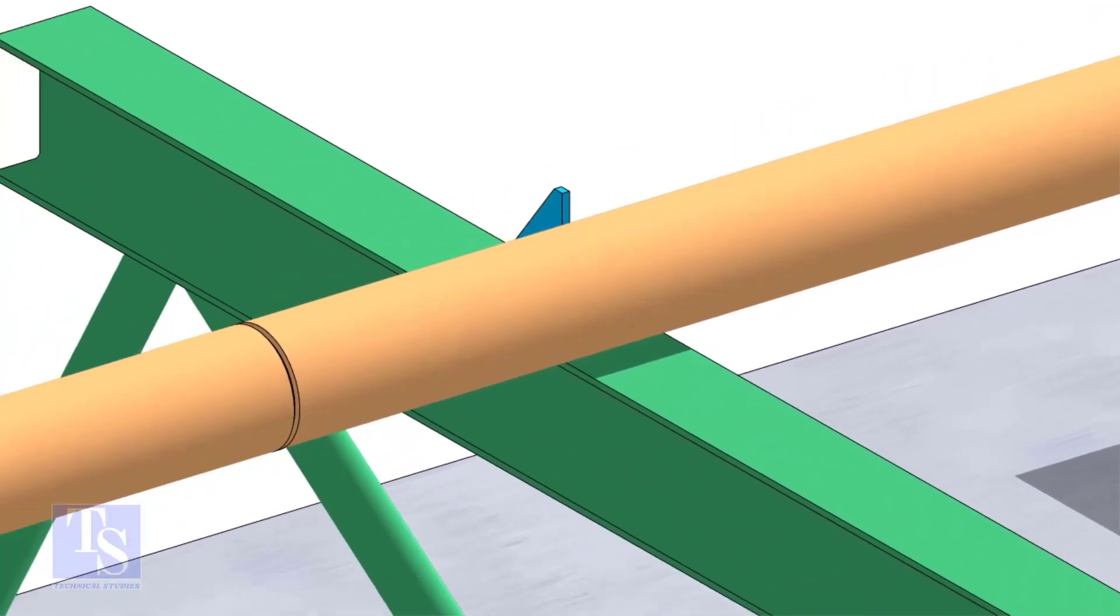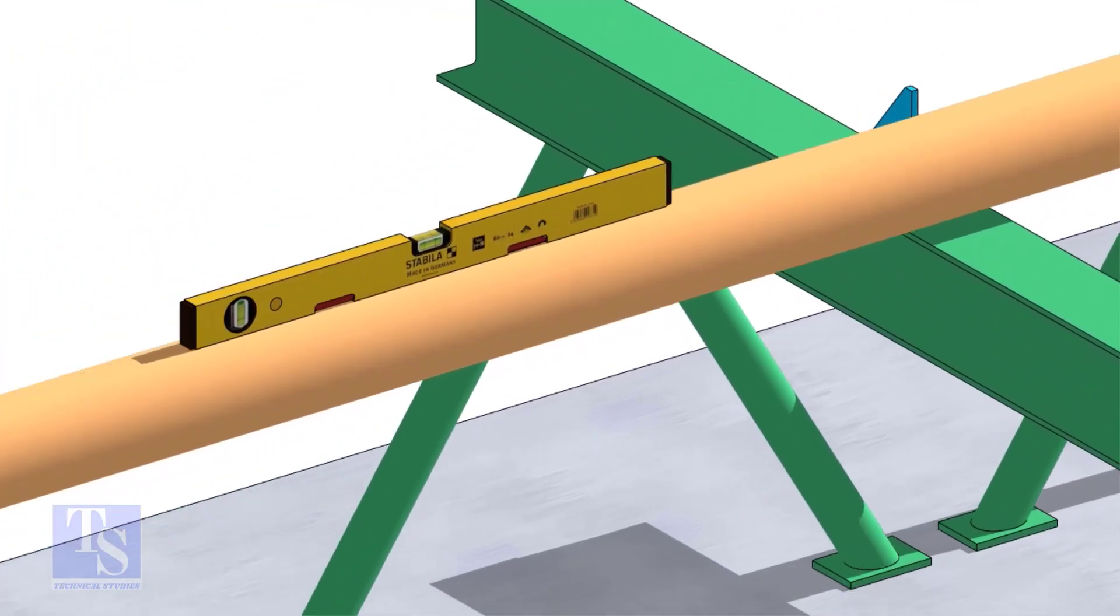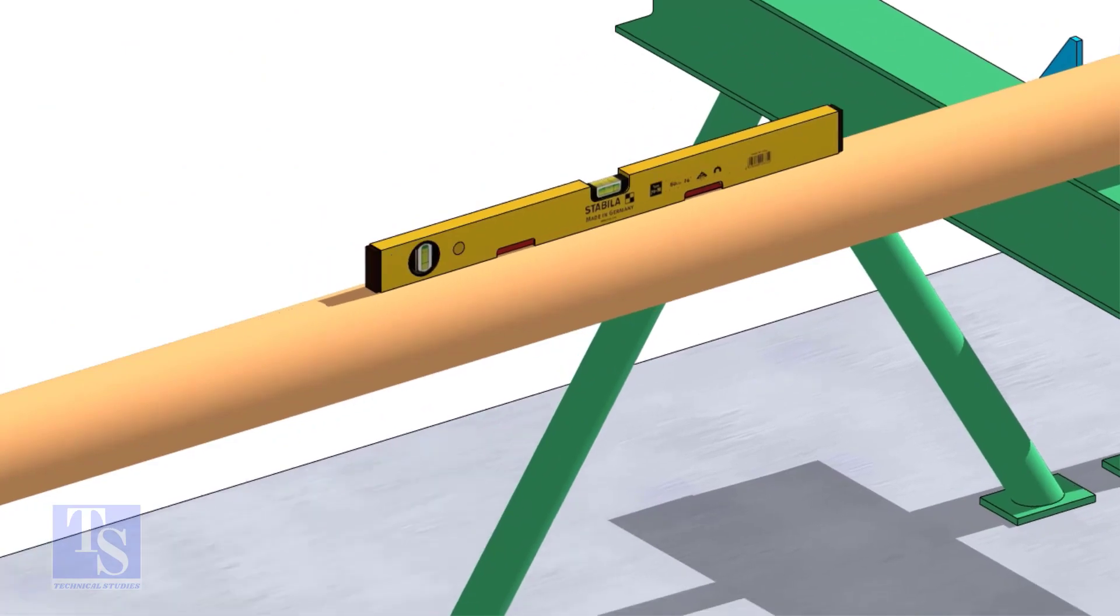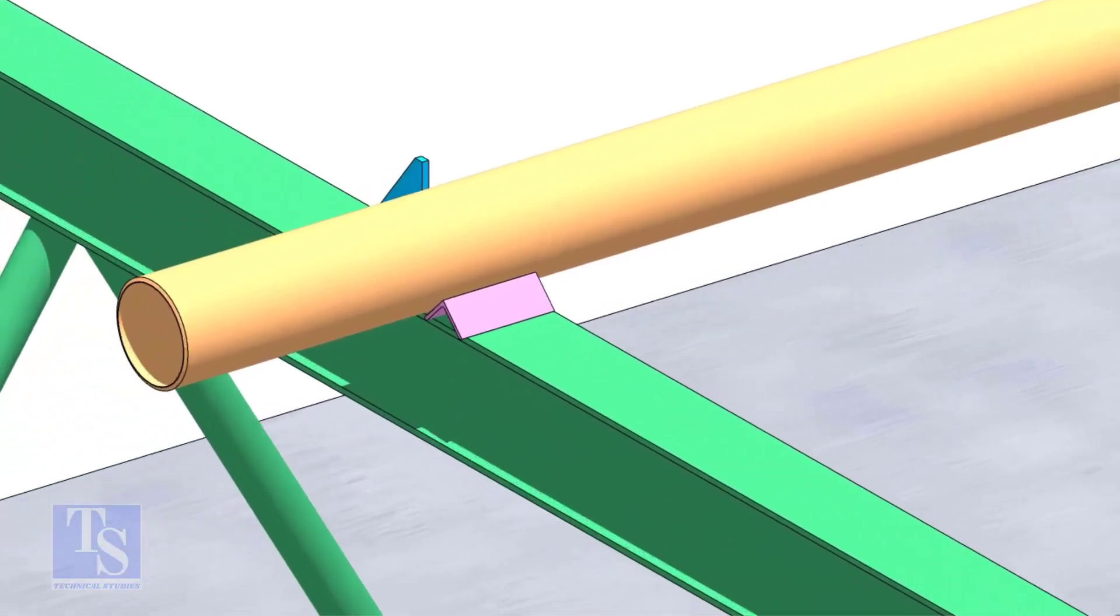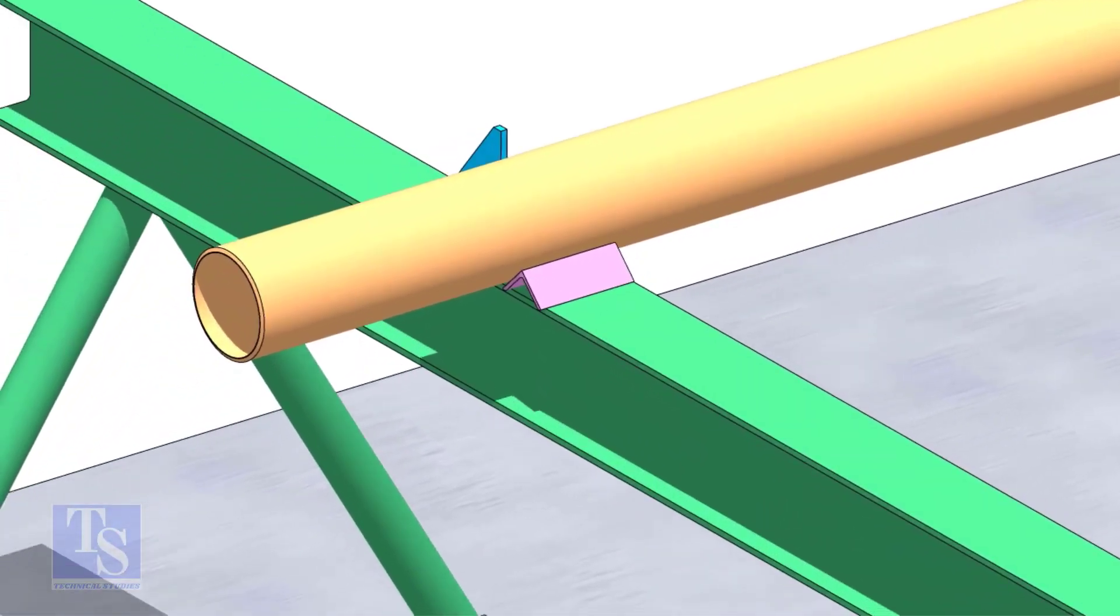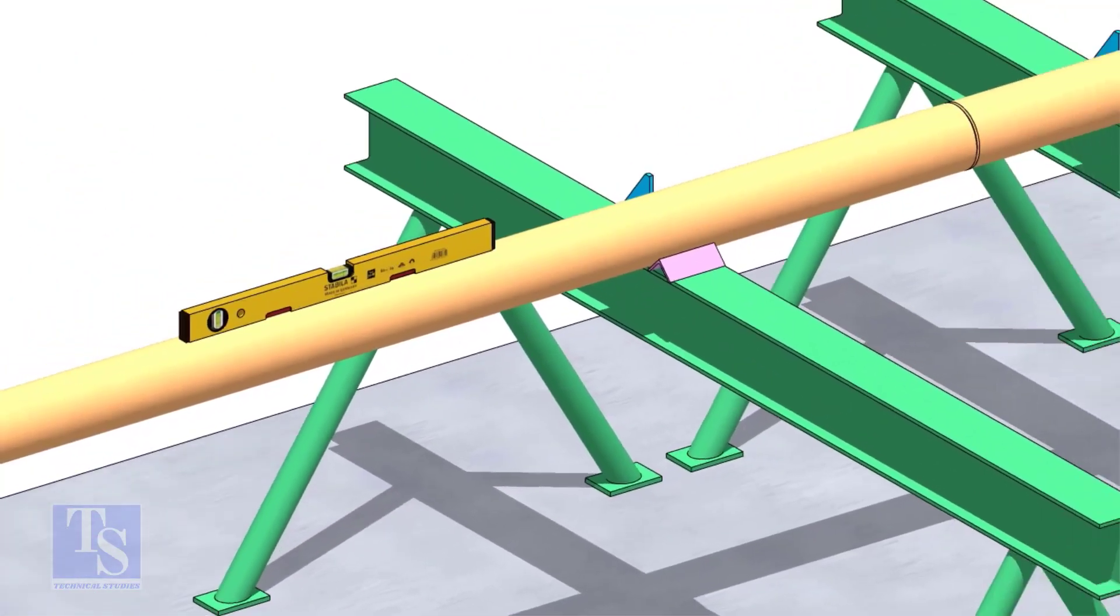You can cross-check the level of the pipes. Arrest the pipes from the other side using wedges or angle stubs.